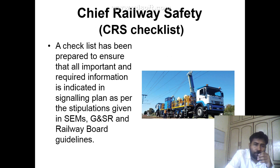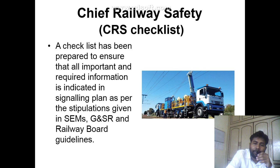Next is the CRS checklist. This is the last document prepared after completing all the work and before commissioning. A CRS inspection is conducted and a checklist is prepared to ensure that all important and required information is indicated in the signaling plan as per the stipulations given in SEMs, GA, SR, and railway board guidelines and authorities.